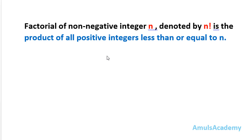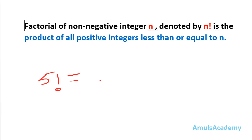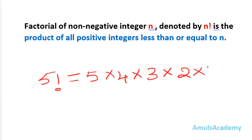This is the definition of the factorial — here we are talking about the non-negative integers. In this tutorial we are concentrating on the positive integers and 0. The factorial of any number is denoted by n! and is nothing but the product of all positive integers less than or equal to n. For example, the factorial of 5 is 5 × 4 × 3 × 2 × 1.